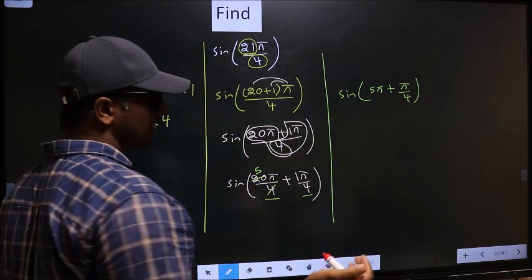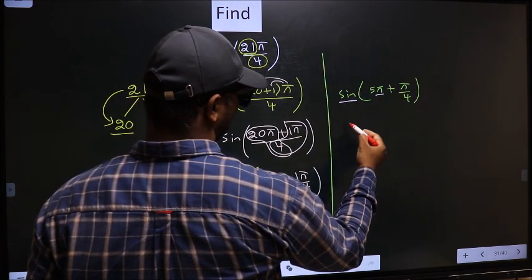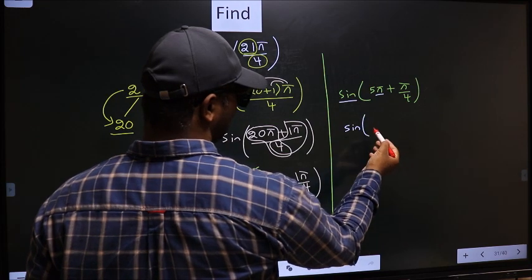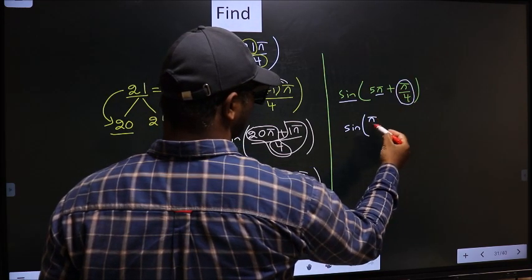Next. Here we have pi. So, sine is not going to change. It will remain sine. And inside we get this angle, pi by 4.